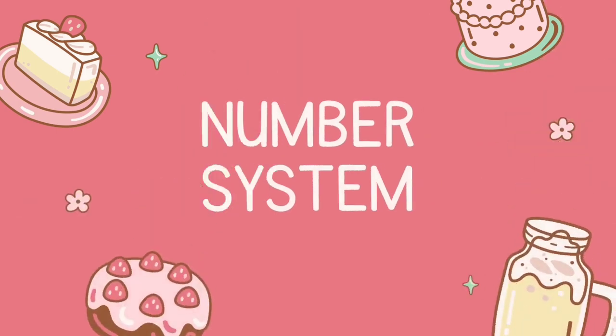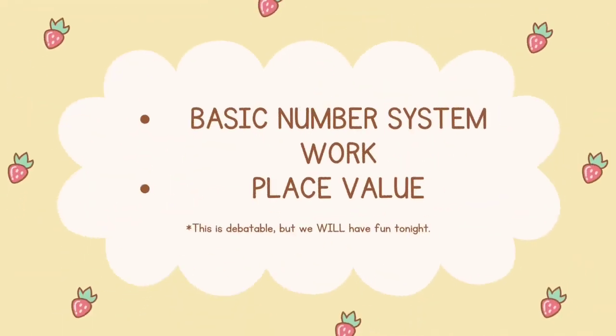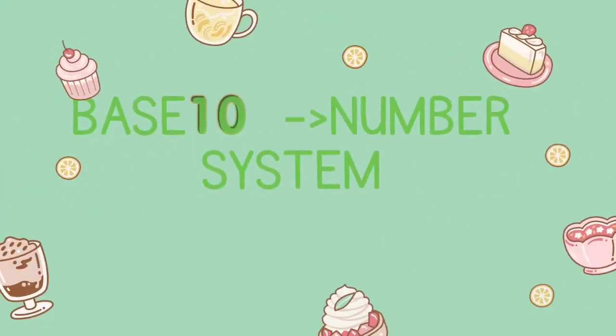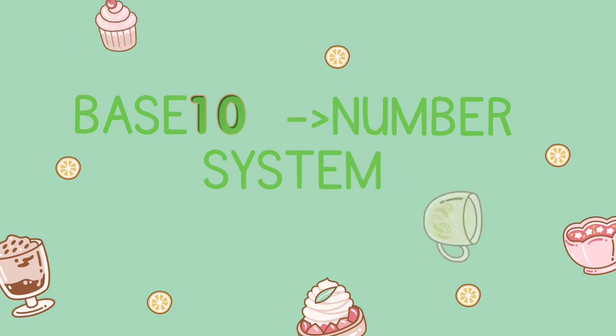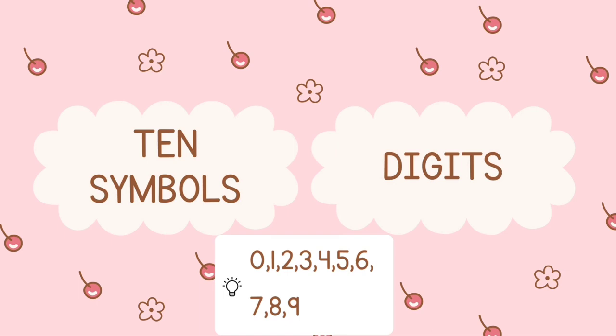Hi all, welcome to Smart Education. In this section we are going to learn how our basic number system works, and we are also going to discuss an important concept called place value. The number system that we use in math is called base 10 because it uses 10 different symbols for counting. You could use other systems based on different numbers like base 2 or base 8. I will give you 10 guesses as to why the number 10 is such a popular choice.